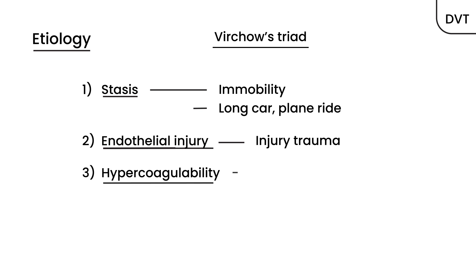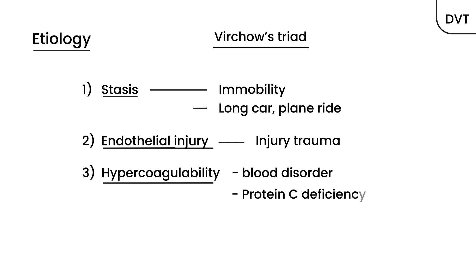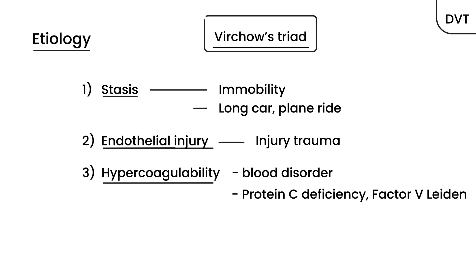The final cause is hypercoagulability, which refers to an inherent blood disorder that a person has — oftentimes one they're born with — that creates a much higher probability of forming blood clots. There are several such disorders: protein C deficiency, Factor V Leiden, antithrombin III deficiency. These inherent blood disorders create hyper-viscosity, leading to a higher chance of blood clots compared to the regular population.